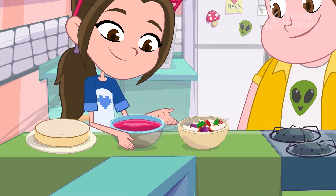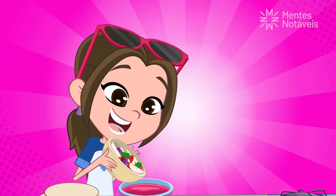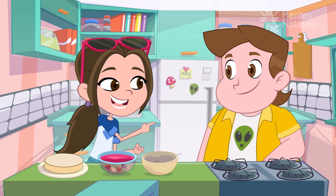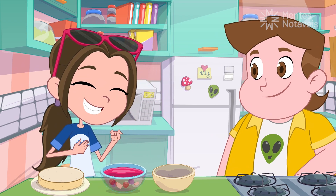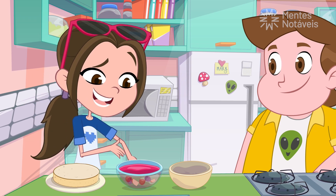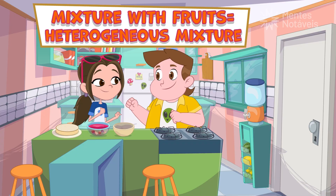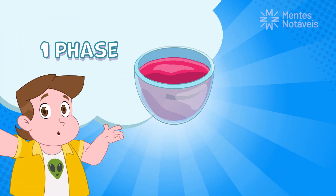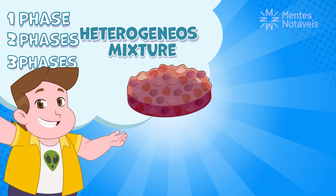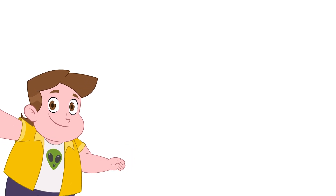The cake is baked and the jelly is dissolved. Now we just need to add these delicious pieces of fruit. Look — now the jelly is no longer homogeneous because I can see the pieces of fruit too. If it's not homogeneous, then it's a heterogeneous mixture. When I mix different substances and can differentiate them just by looking, we have a heterogeneous mixture — like oil with water, or rice with beans.